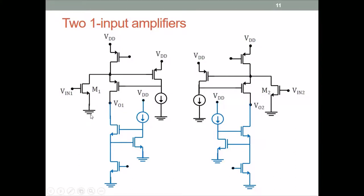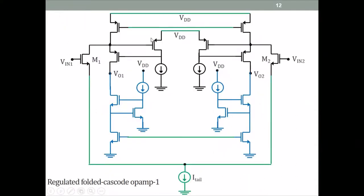The tail current source is grounded at the other end, and everything else remains the same. So we have M1 and M2 with their sources connected together and tied to a tail current source. Because this is now one big amplifier, we can connect the gates of the two NMOS cascode transistors together, and the gates of the PMOS together. This is our folded cascode regulated op-amp.